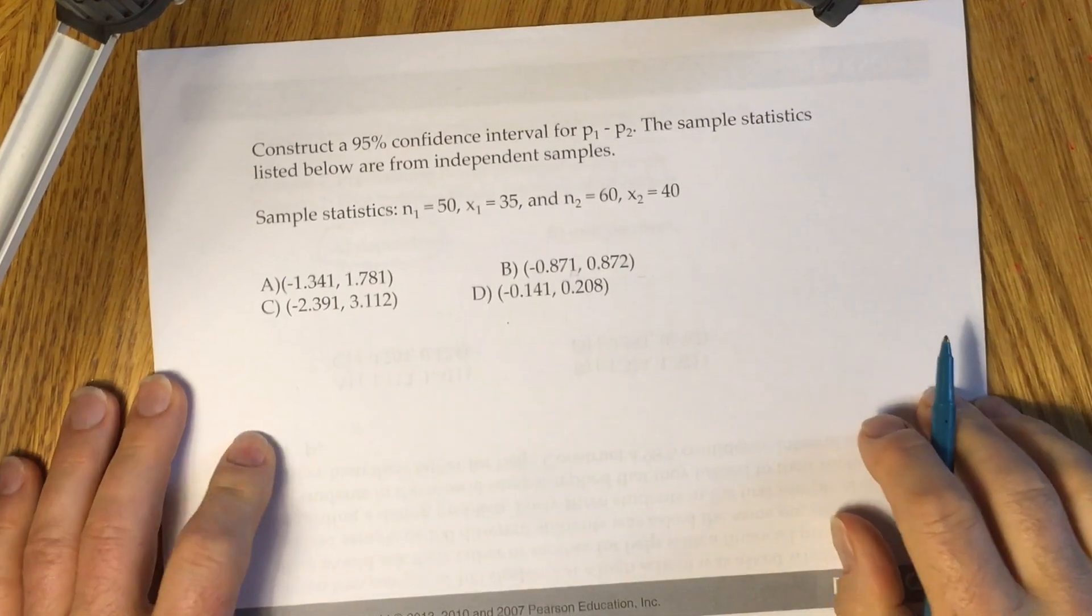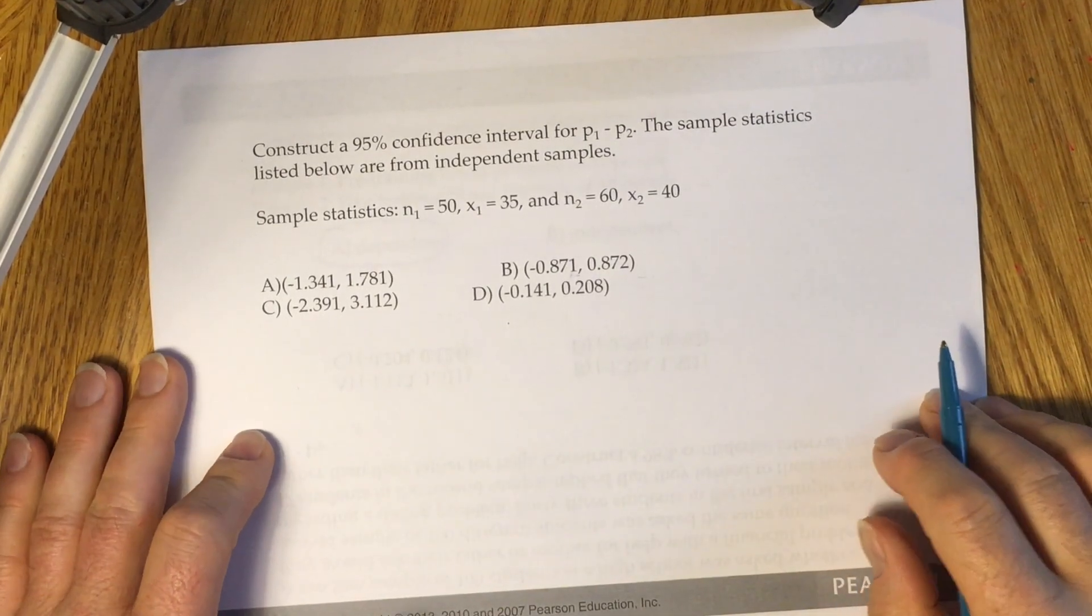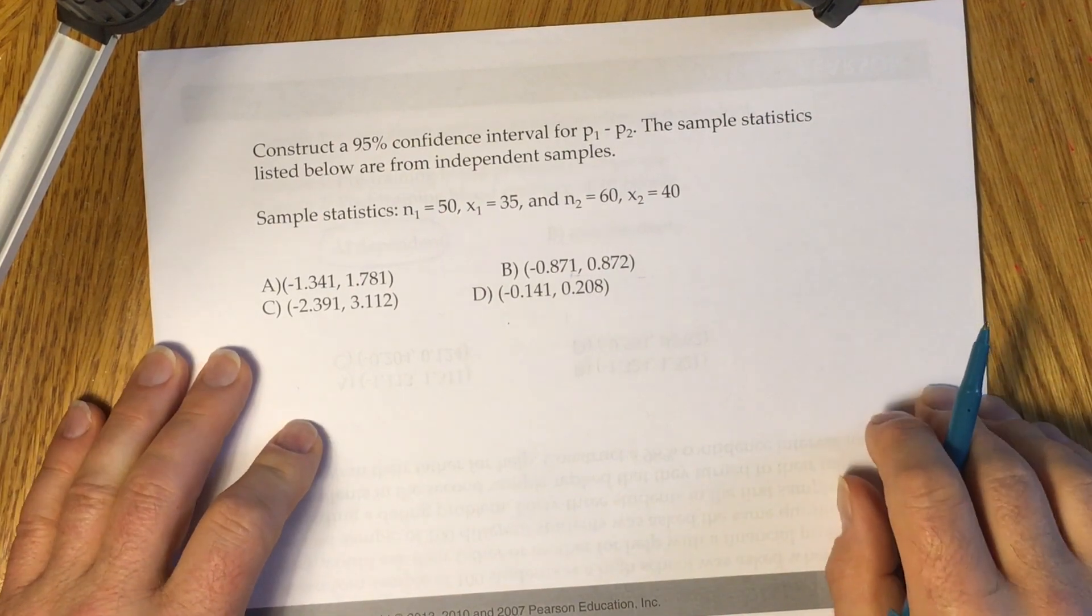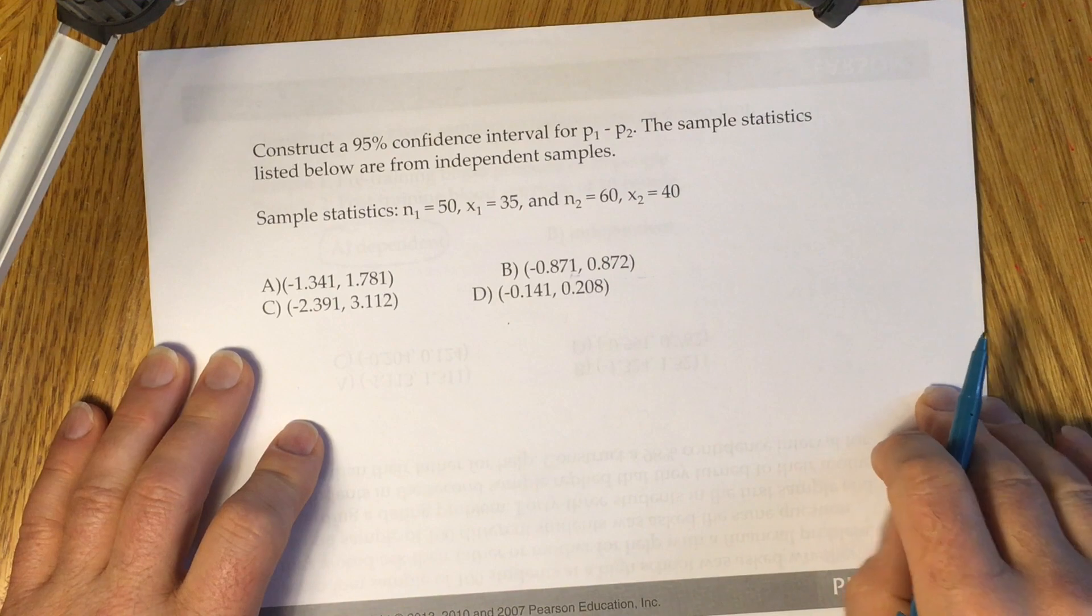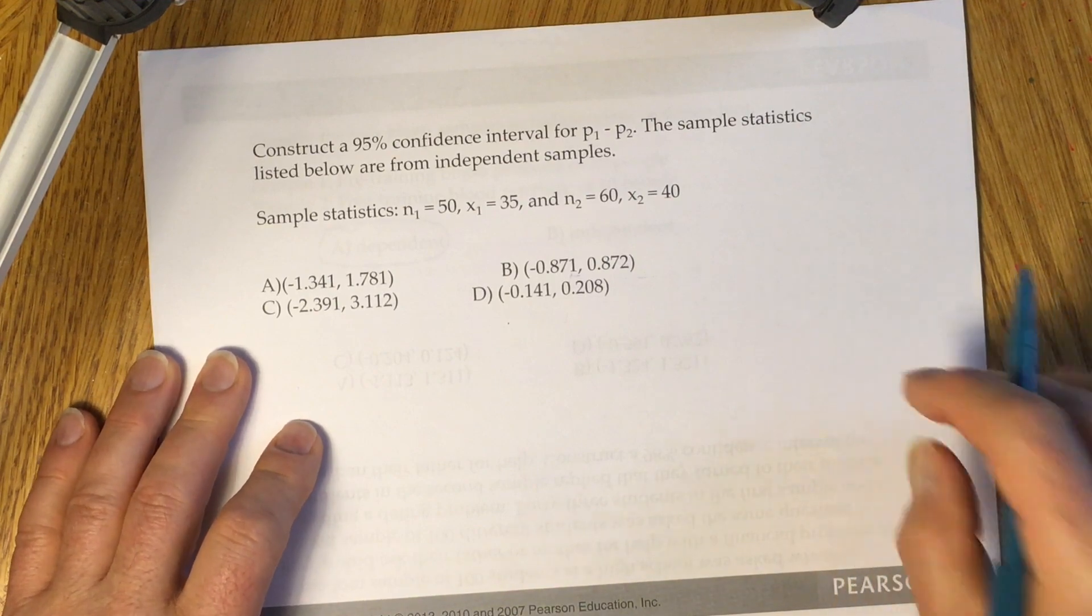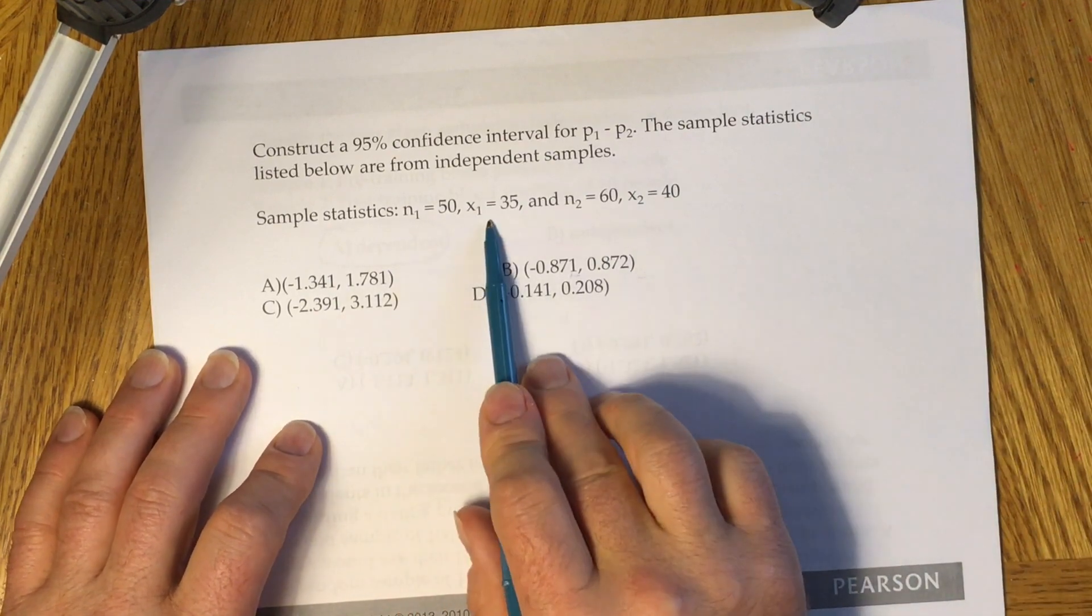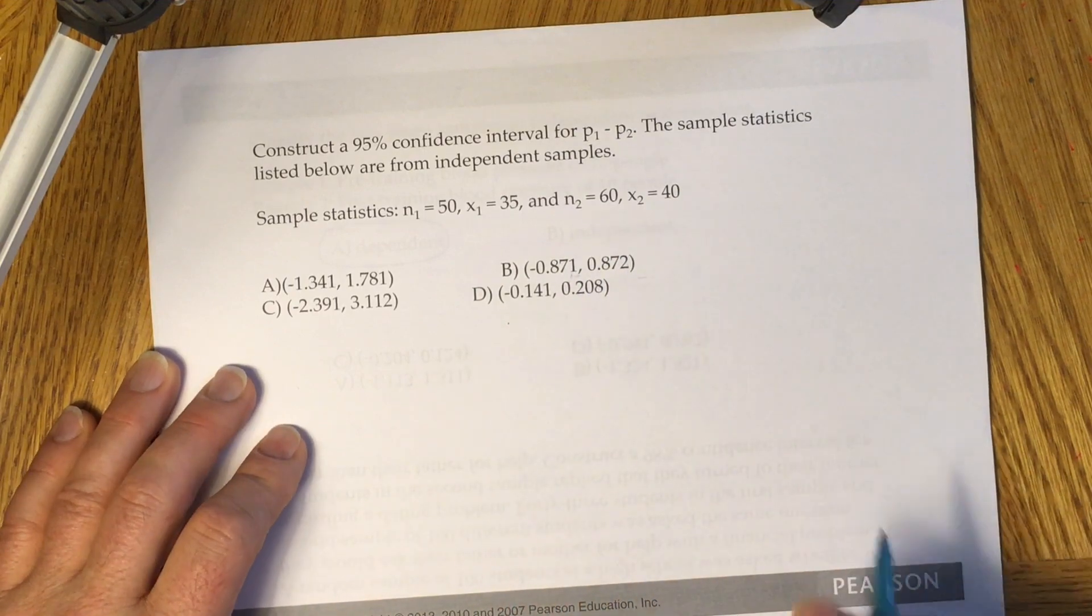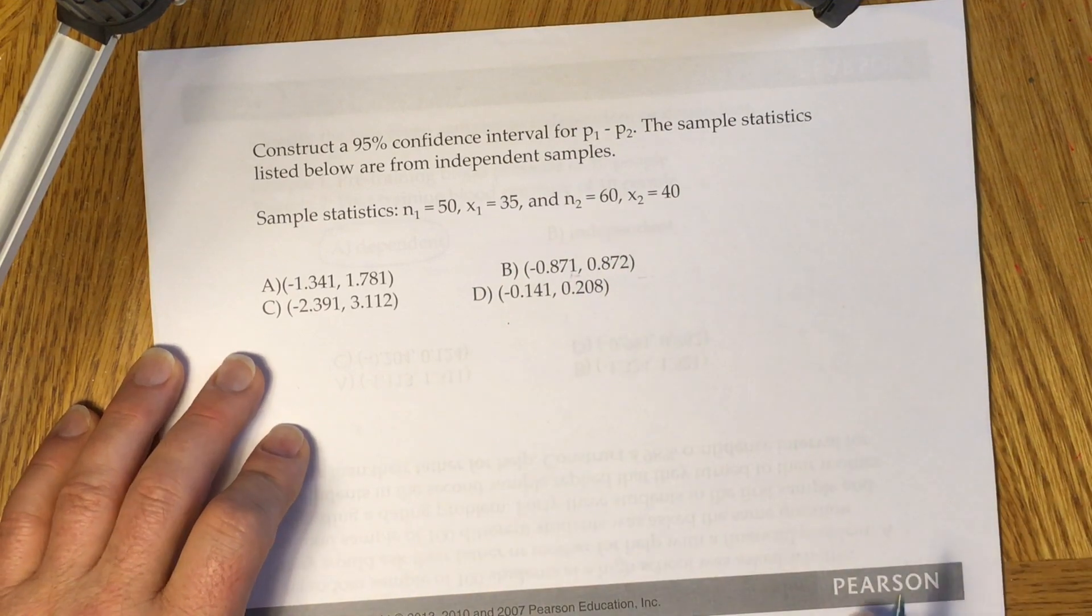Construct a 95% confidence interval for the difference between proportions P1 and P2. The sample statistics listed below are from independent samples: n1=50, x1=35, n2=60, x2=40. We have all the data given to us.